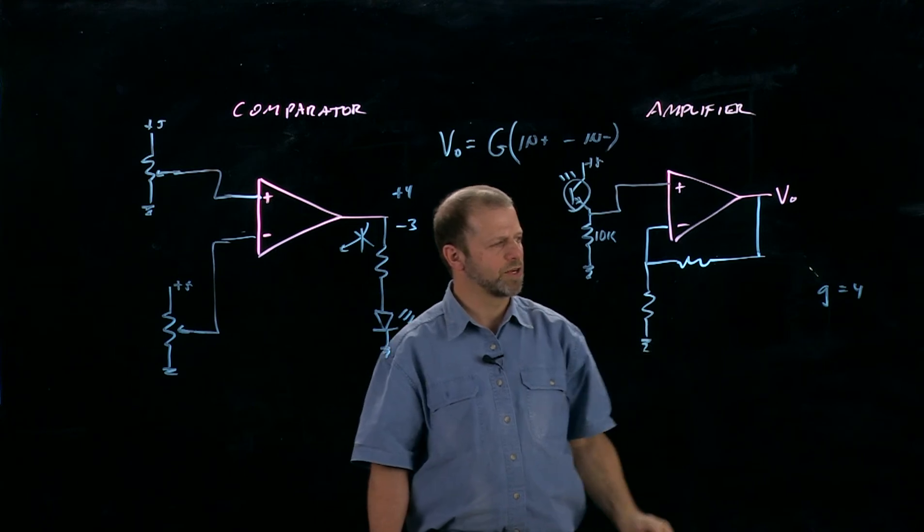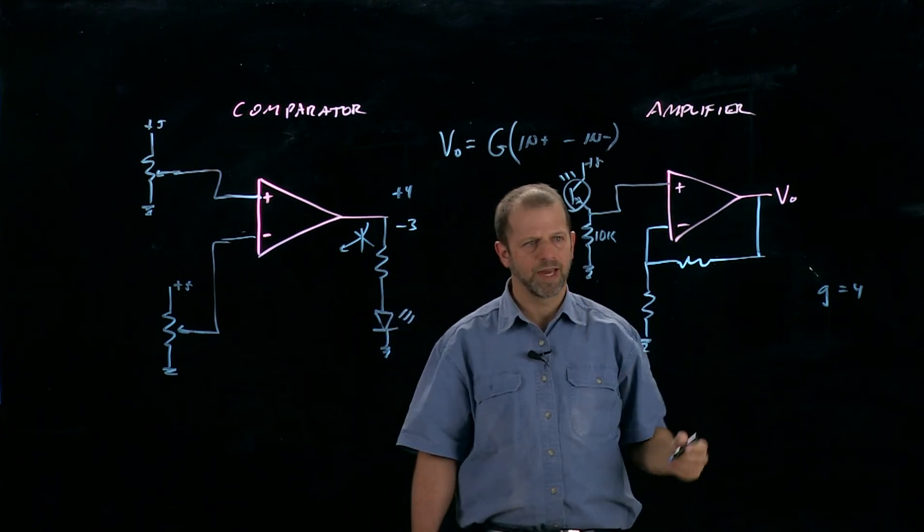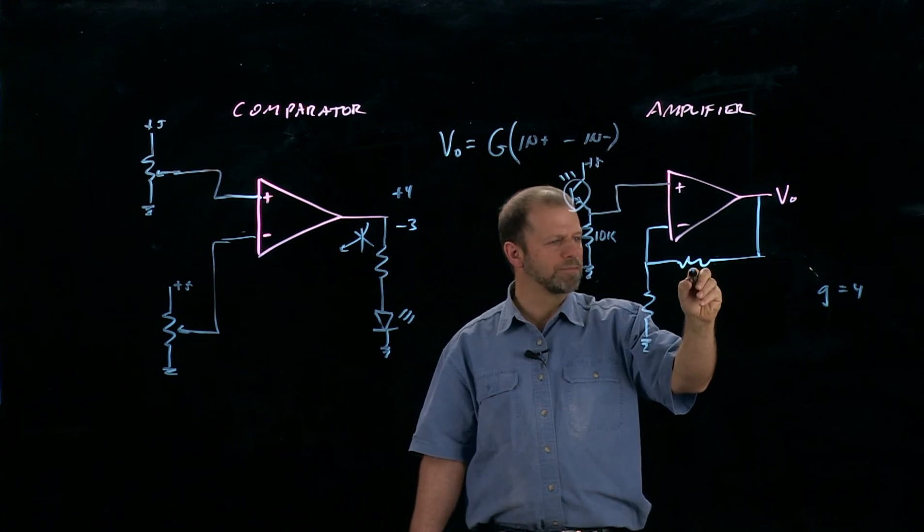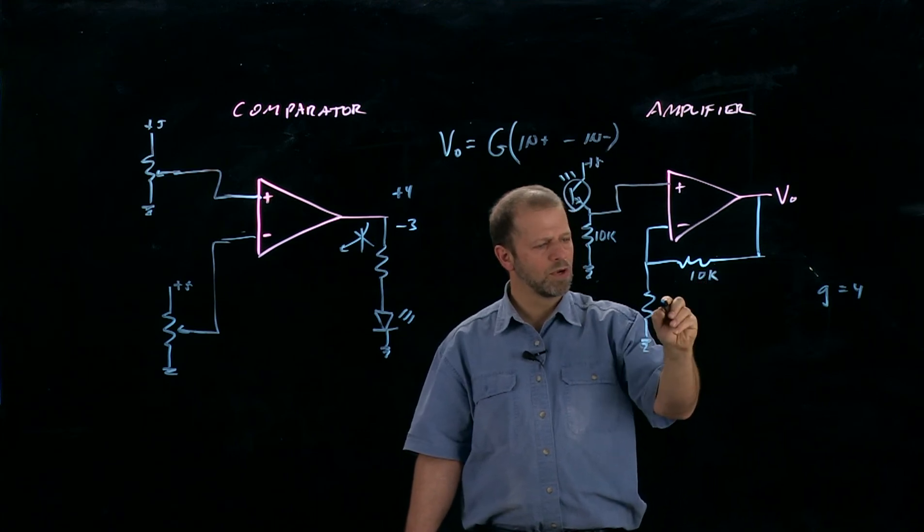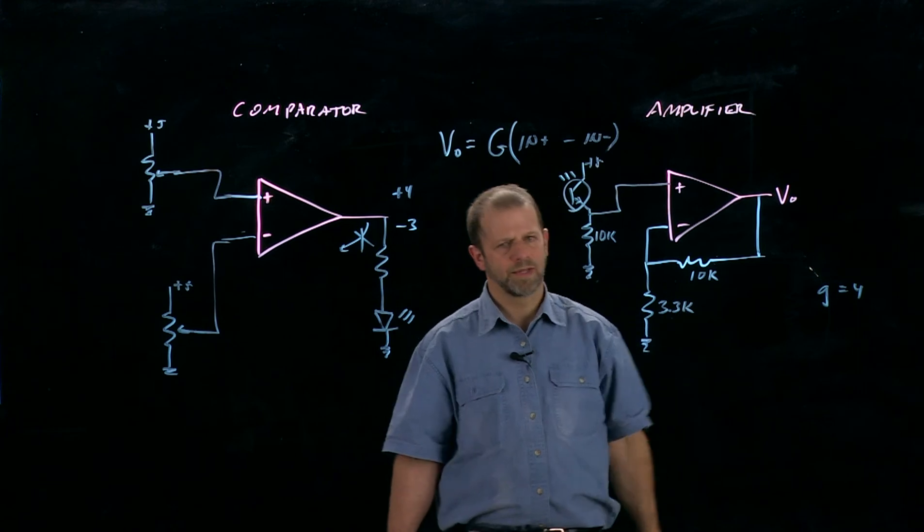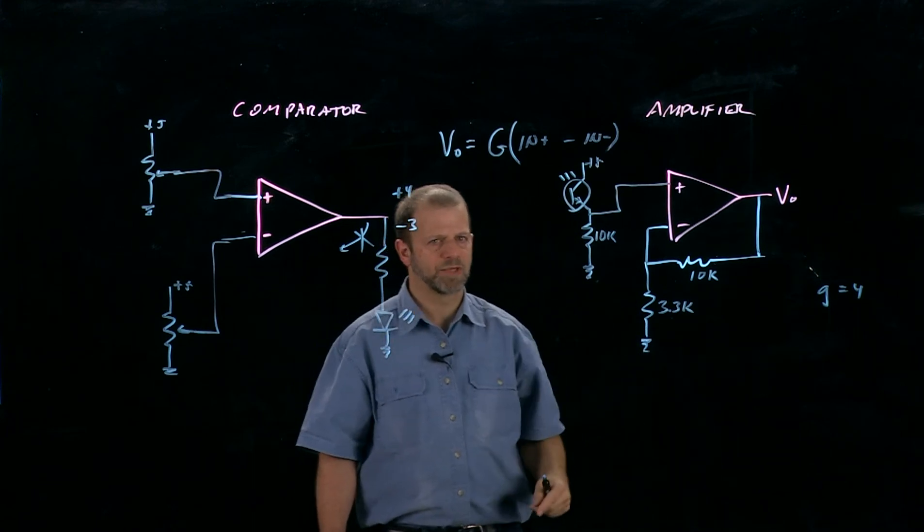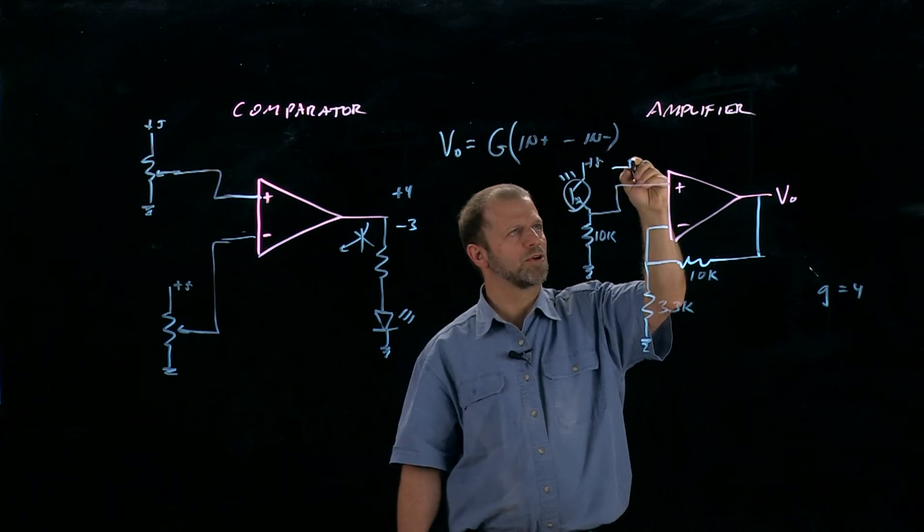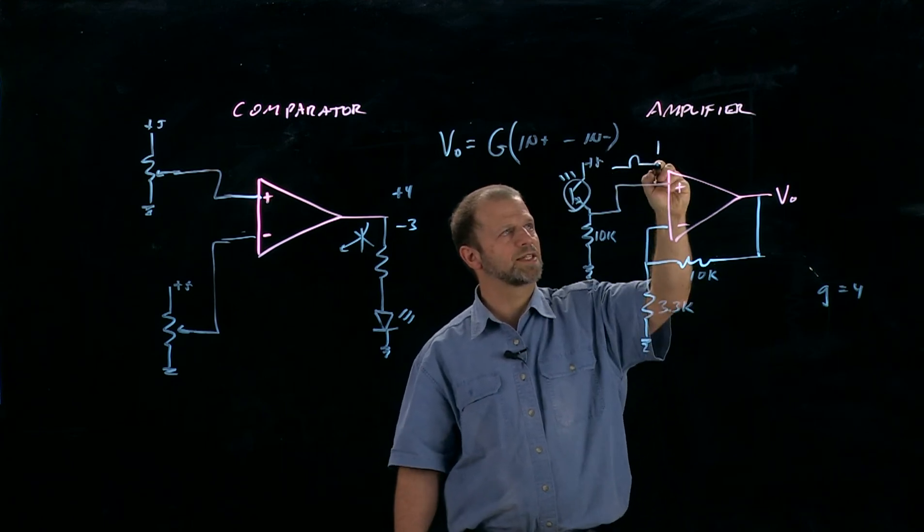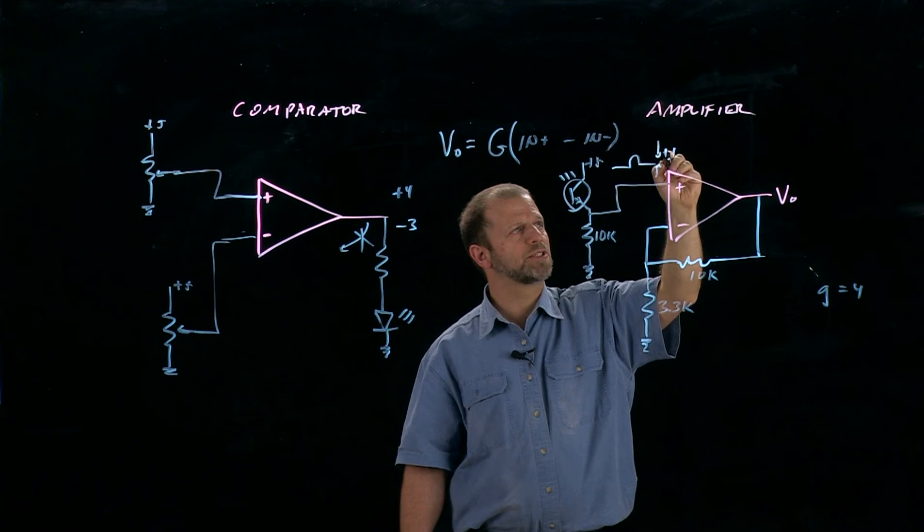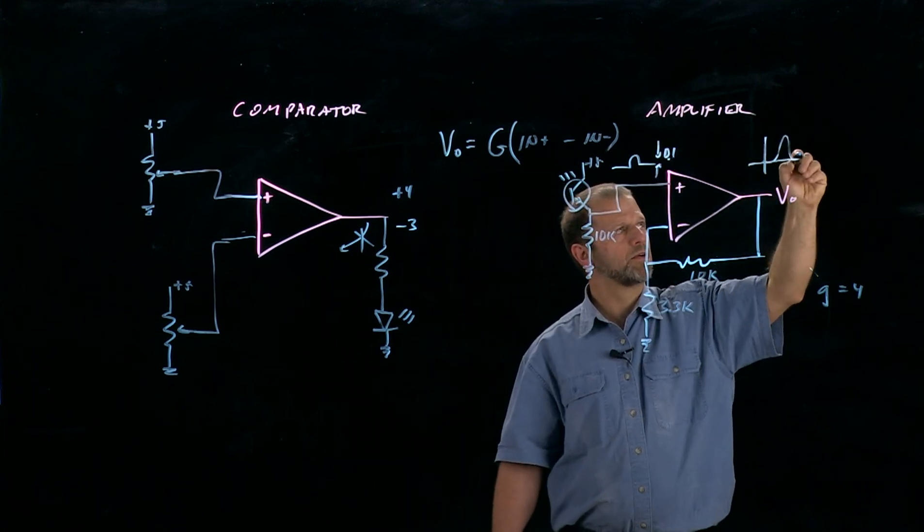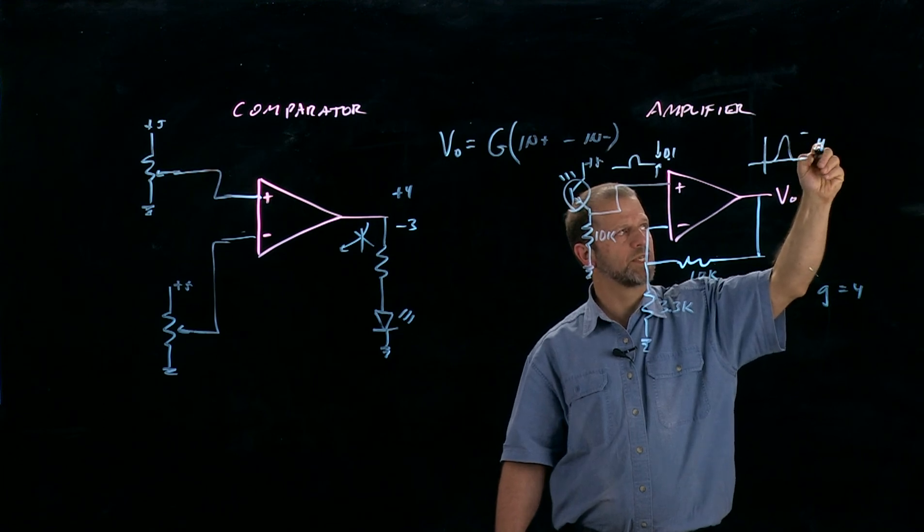In this amplifier configuration, this is a non-inverting amplifier configuration. I'll give it a gain of 4. This has a gain of 4. And now, if this signal, for instance, goes up a little bit like this and only gets a tenth of a volt in amplitude, the output is going to be four times bigger, four tenths of a volt in amplitude.